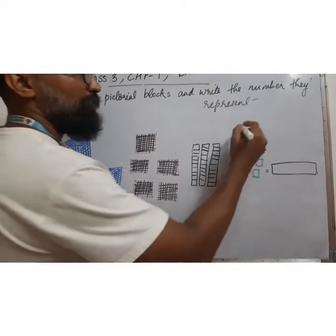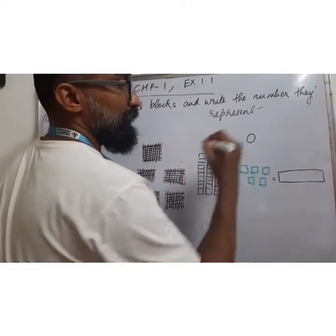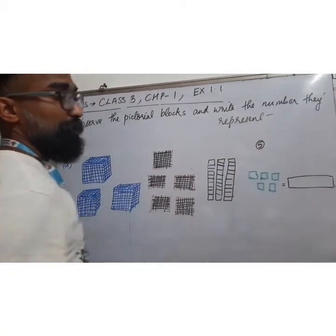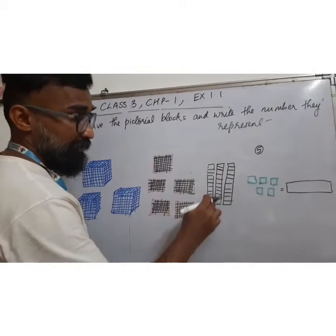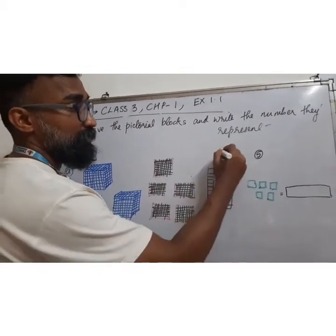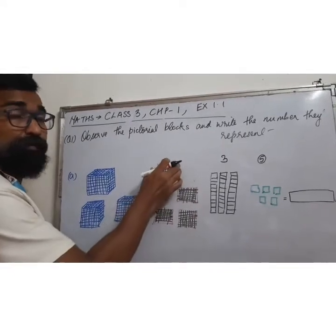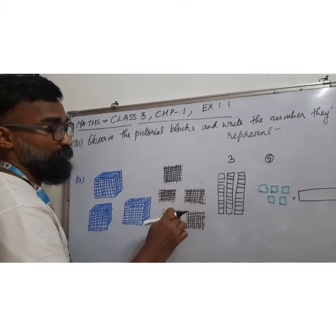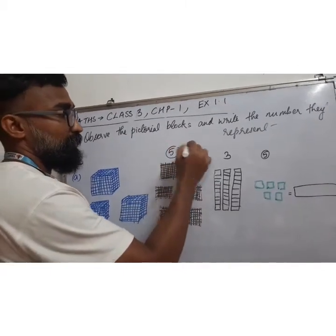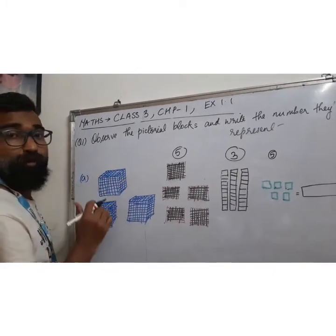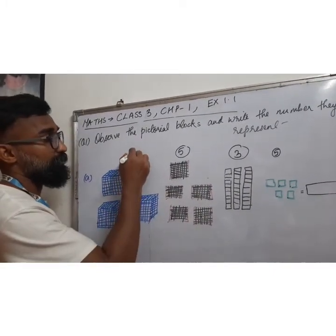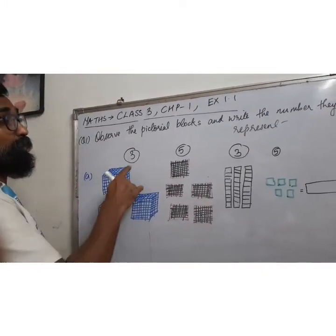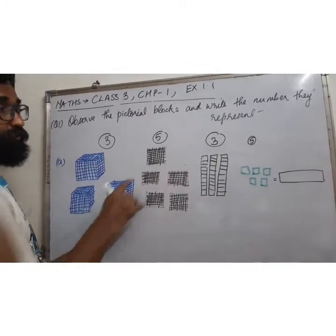Clear? So, this is 1, 2, 3, 4, 5. This is 5. This is 1, 2, 3. This is 100. How much is this? 1, 2, 3, 4, 5. This is 1, 2, 3, 5. And this is 1, 2, 3, 5.